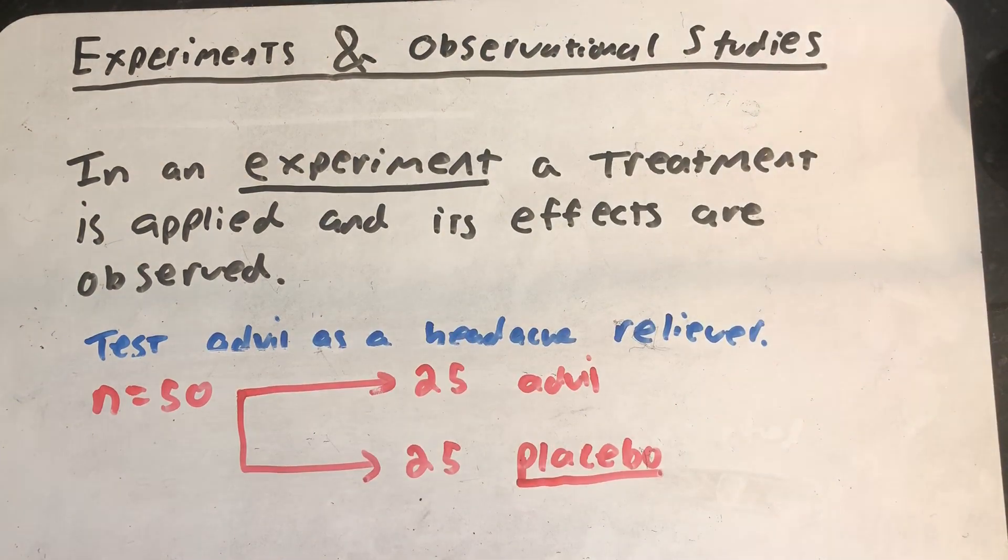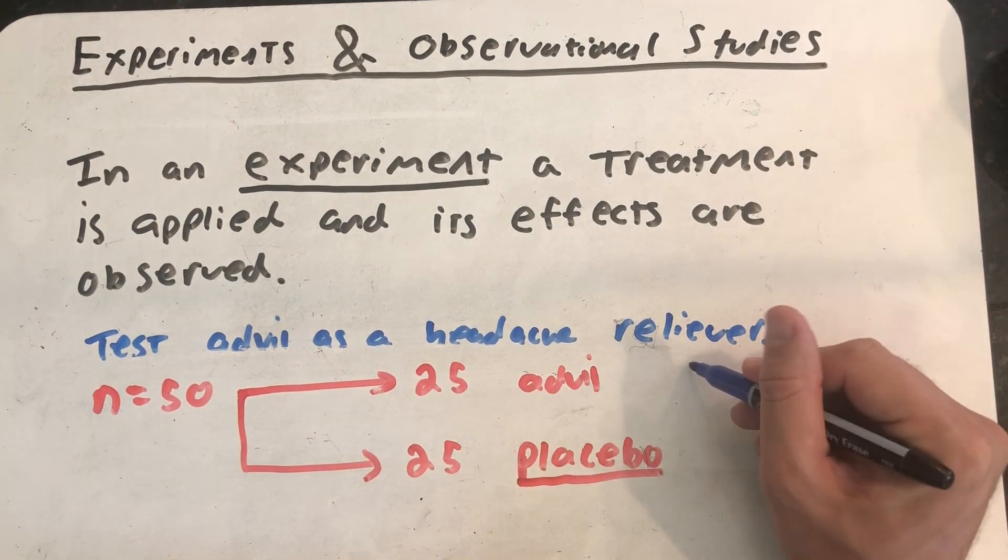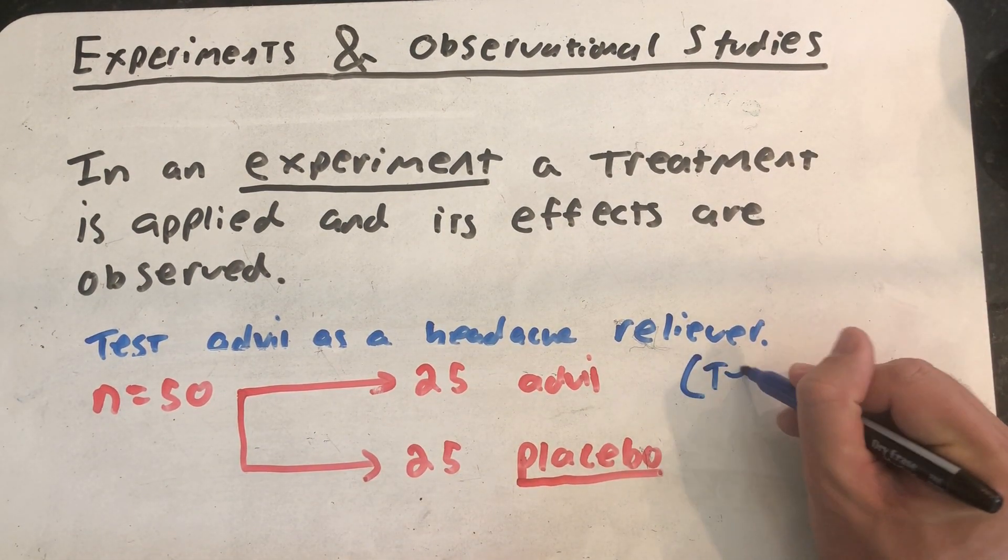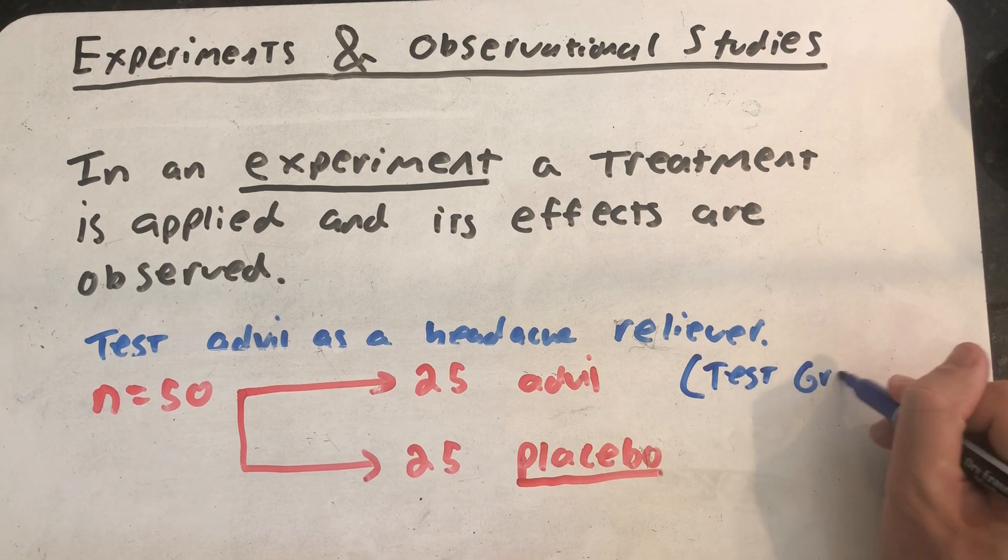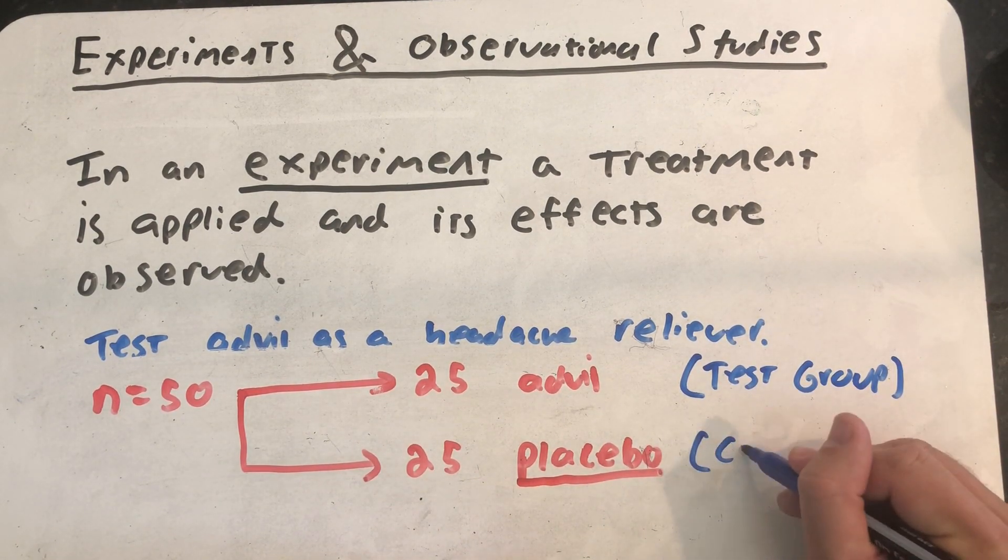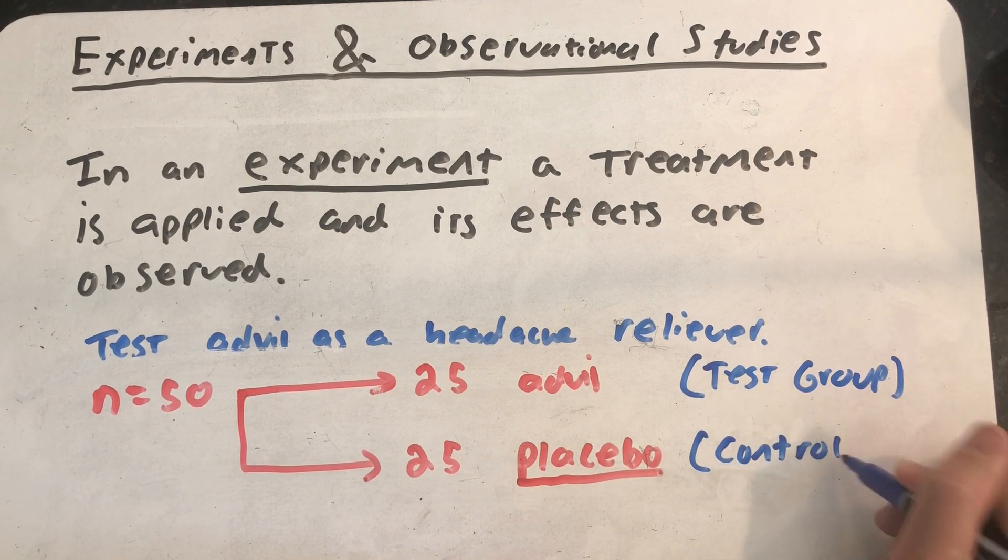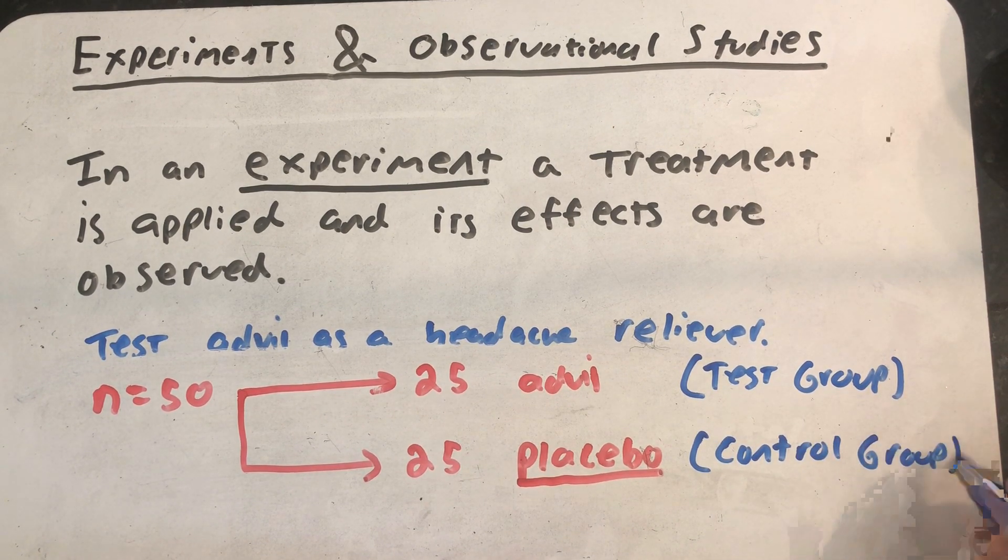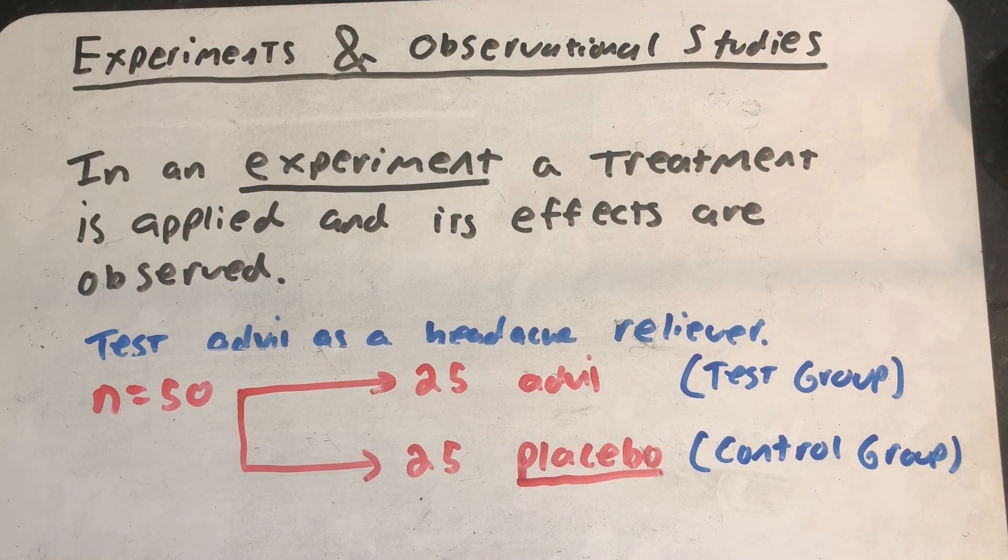This group that gets Advil is called the test group. This group that gets the placebo is called the control group. In a statistical study, it is often a very good idea to have both a test group and a control group so that we can compare those results.